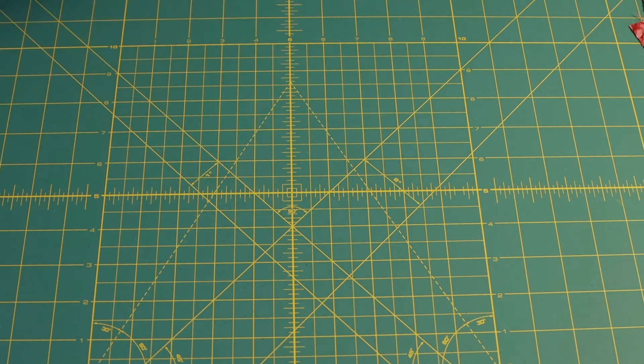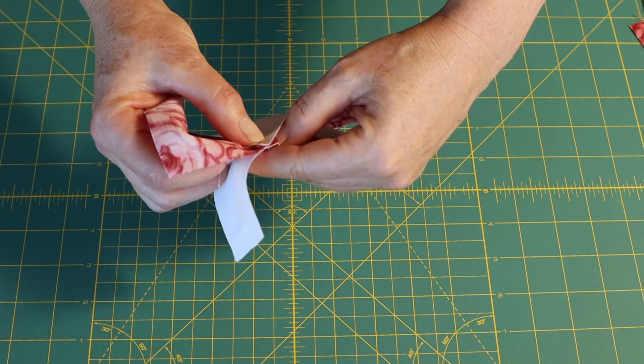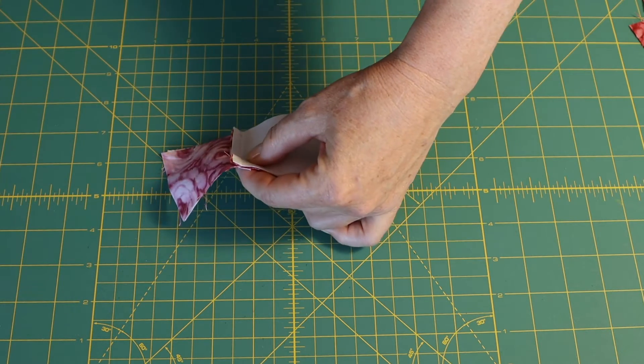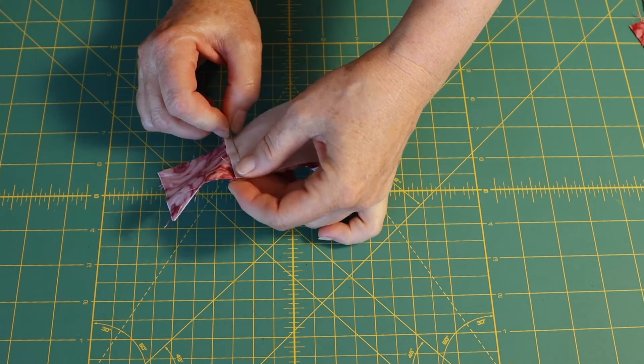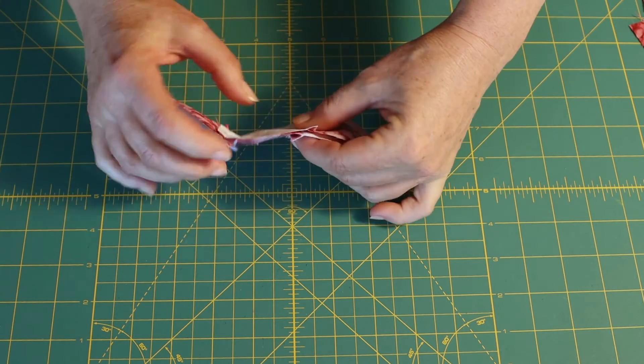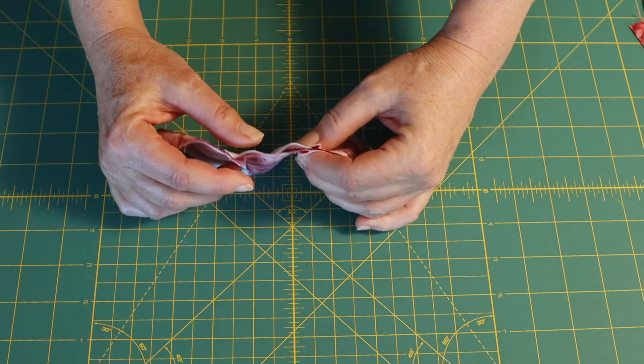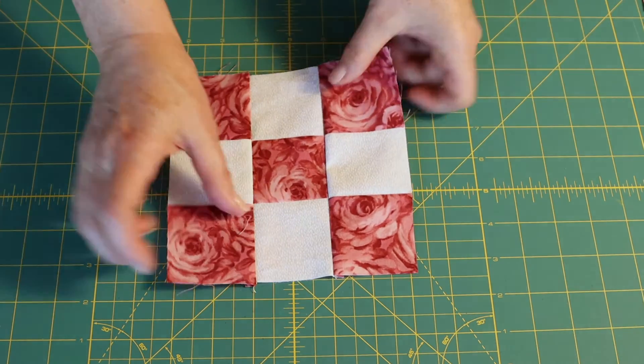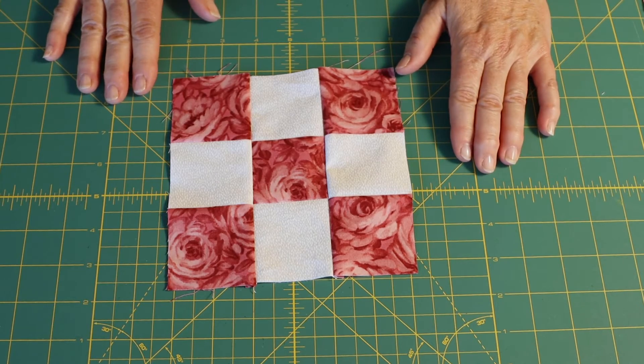When you put those together and do your little squishy thing with your fingers and put your pins through, you will have really nice nested seams. Then when you open that up, get it together, and iron it out, there's your nine patch.